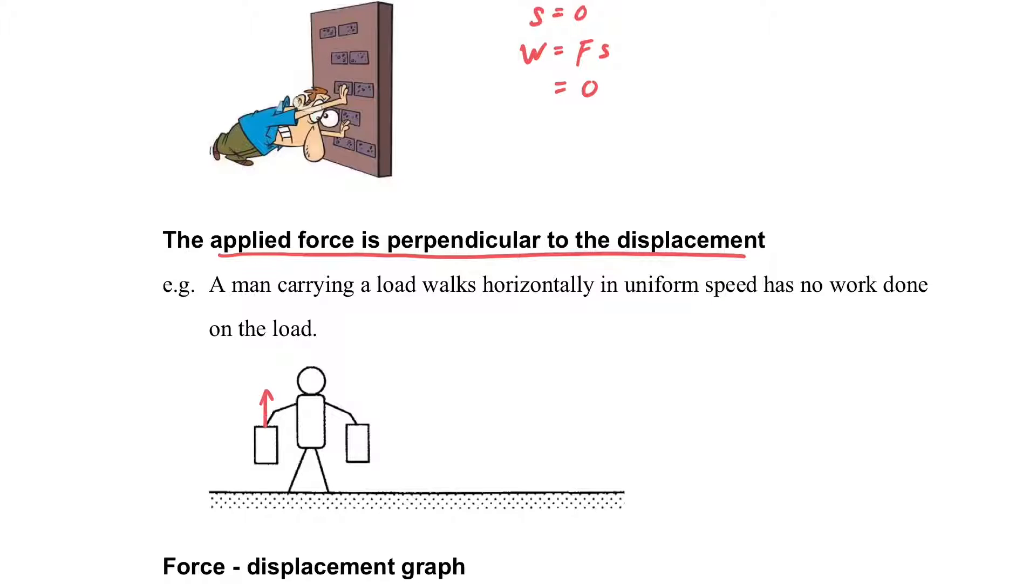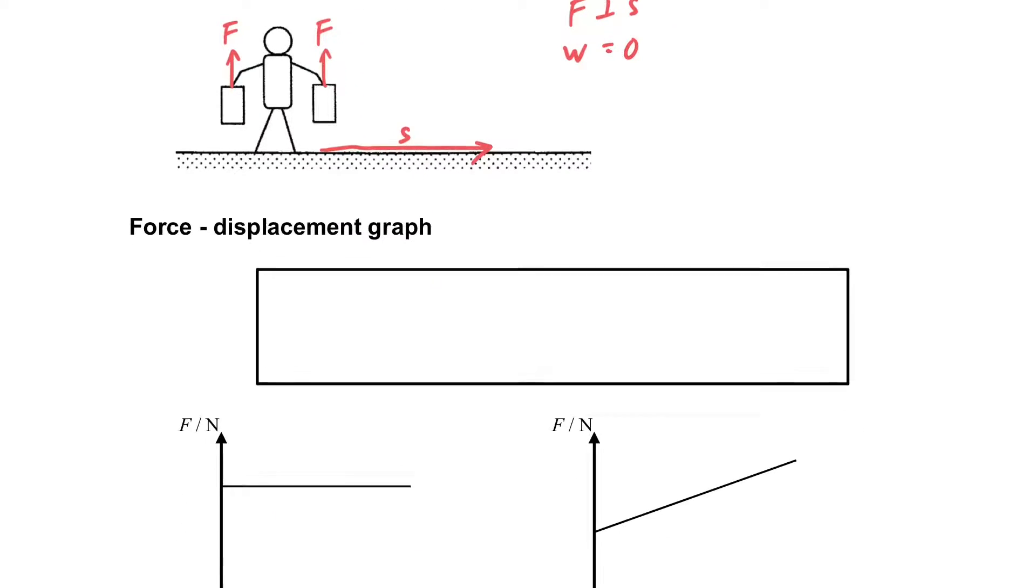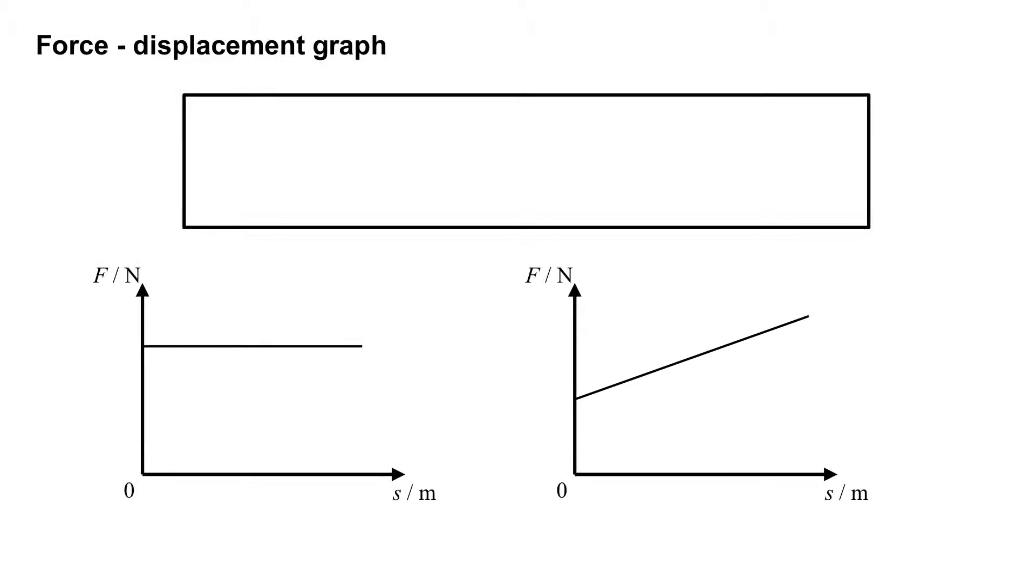And the most tricky one is when the applied force is perpendicular to the displacement, there is also no work done. For example, if we apply the force upward carrying too heavy luggage to move horizontally, because the force is perpendicular to the displacement, the work done is also zero.